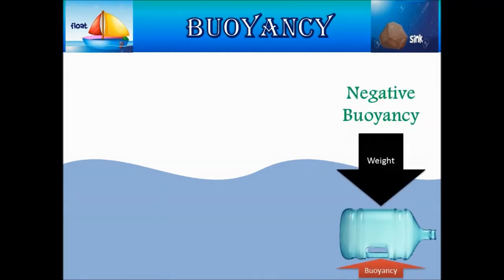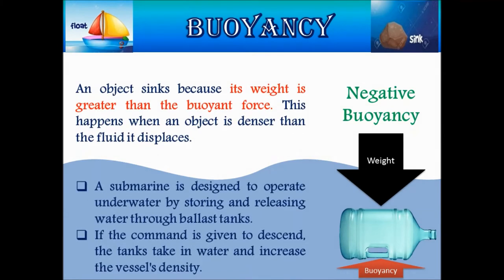Negative buoyancy occurs when an object sinks because its weight is greater than the buoyant force. This happens when an object is denser than the fluid it displaces. An example of negative buoyancy is a submarine, which is designed to operate underwater by storing and releasing water through ballast tanks. If the command is given to descend, the tanks take in water and increase the vessel's density.